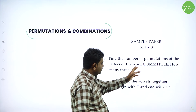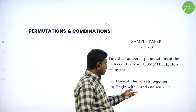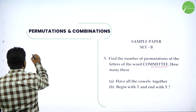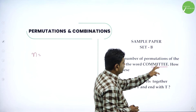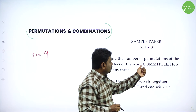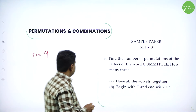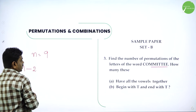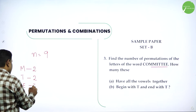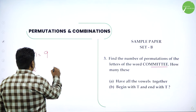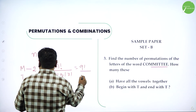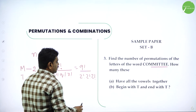Find the number of permutations of the letters of the word committee. How many of them have vowels together? How many begin with T and end with T? Committee has 9 letters. M is repeated twice, T is repeated twice, E is repeated twice. The total number of permutations is 9 factorial divided by 2 factorial into 2 factorial into 2 factorial.